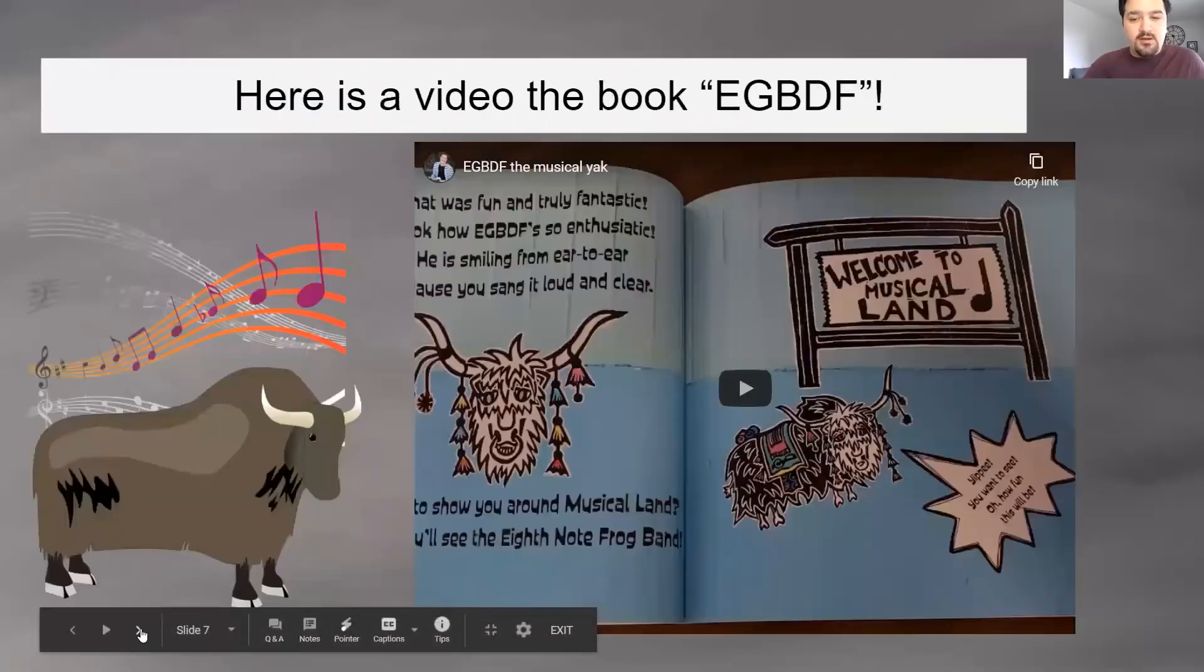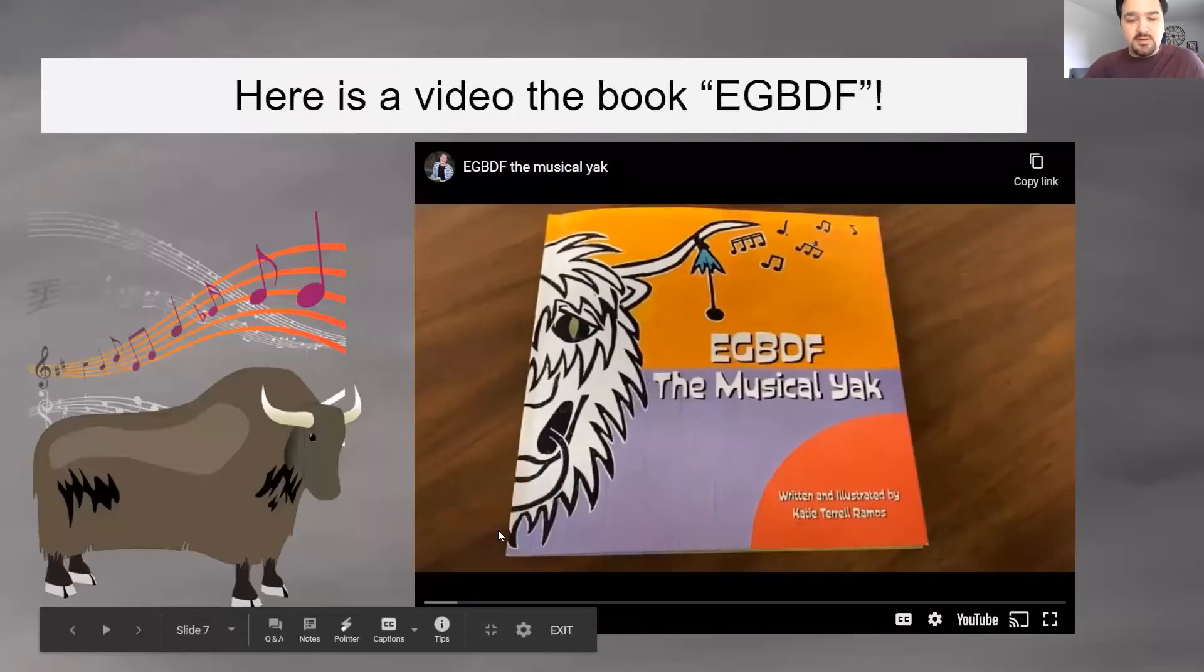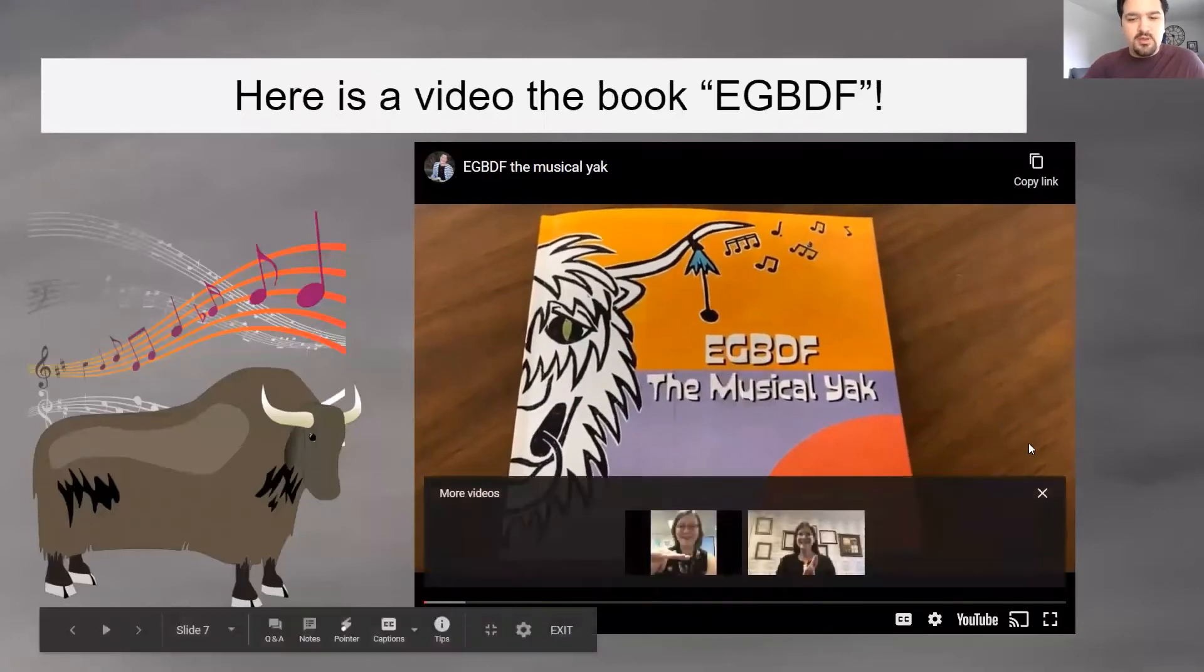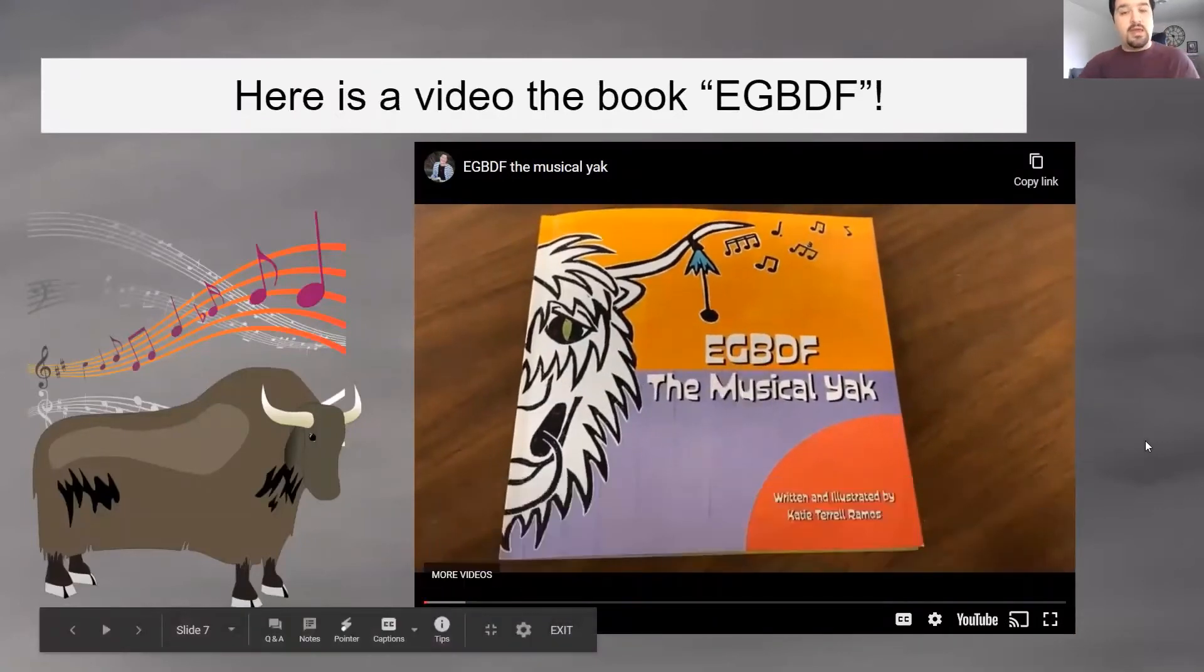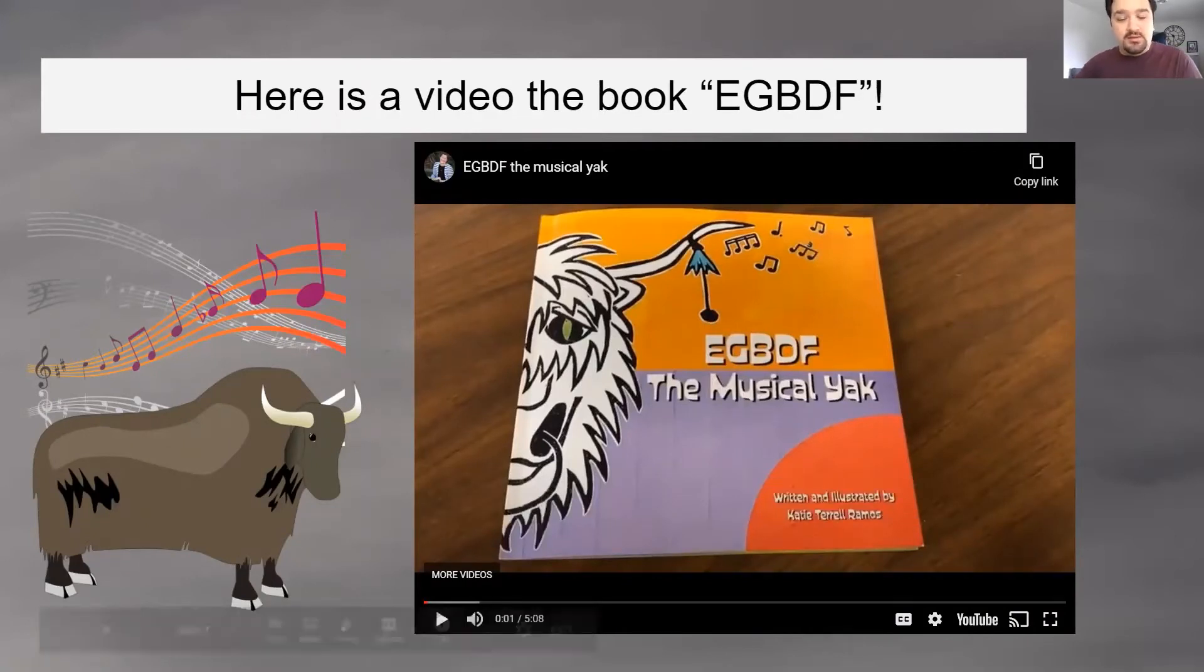Now, I had one of my music teacher friends read us a book. Now this one, you see the letters? E, G, B, D, F. What were those? Were those the lines or the spaces? Those were the lines. Well, we now have a musical book that's called, and I'm going to try and get this right, EGBDF, the Musical Yak. That sounds kind of funny. Let's watch.